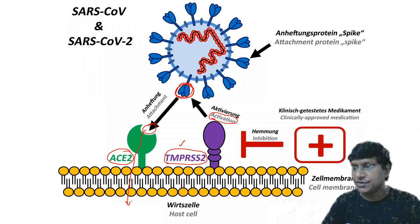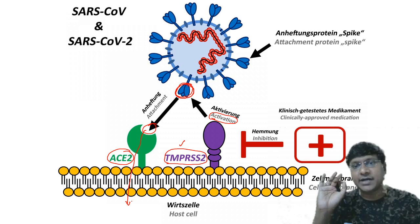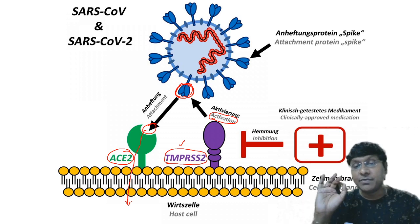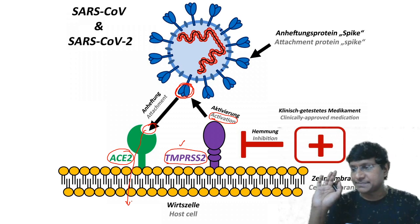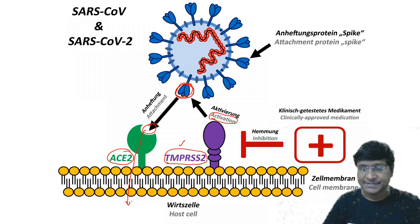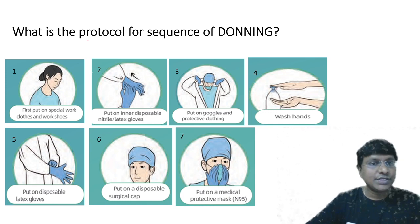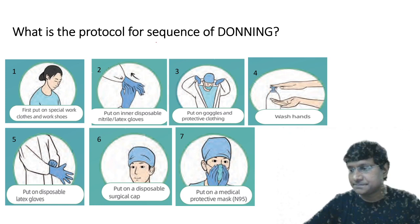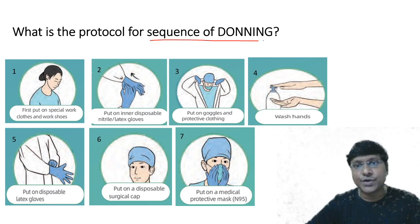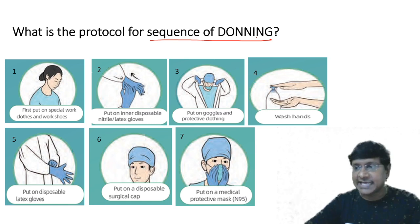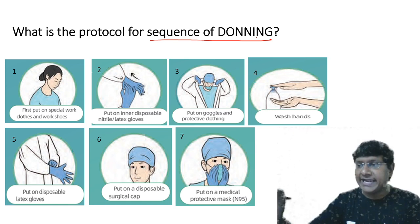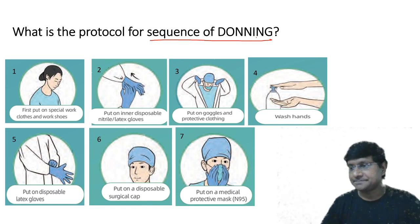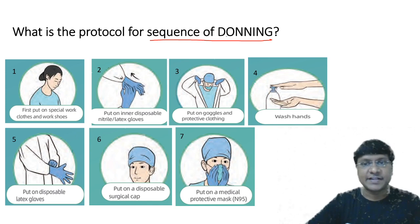This is very important for practical purposes. Regarding the protocol for the sequence of donning — TMPRSS2 acts as a co-receptor because it helps the binding of the spike protein to the ACE2 receptor. Now, what is the protocol for the sequence of donning PPE?